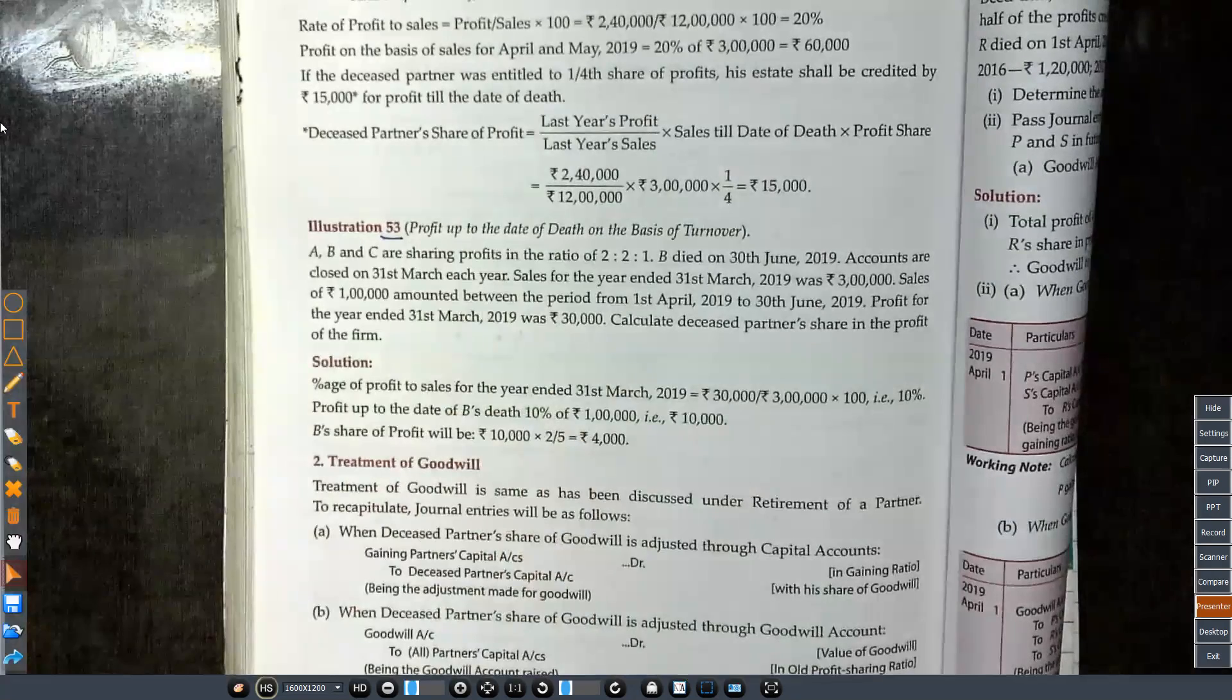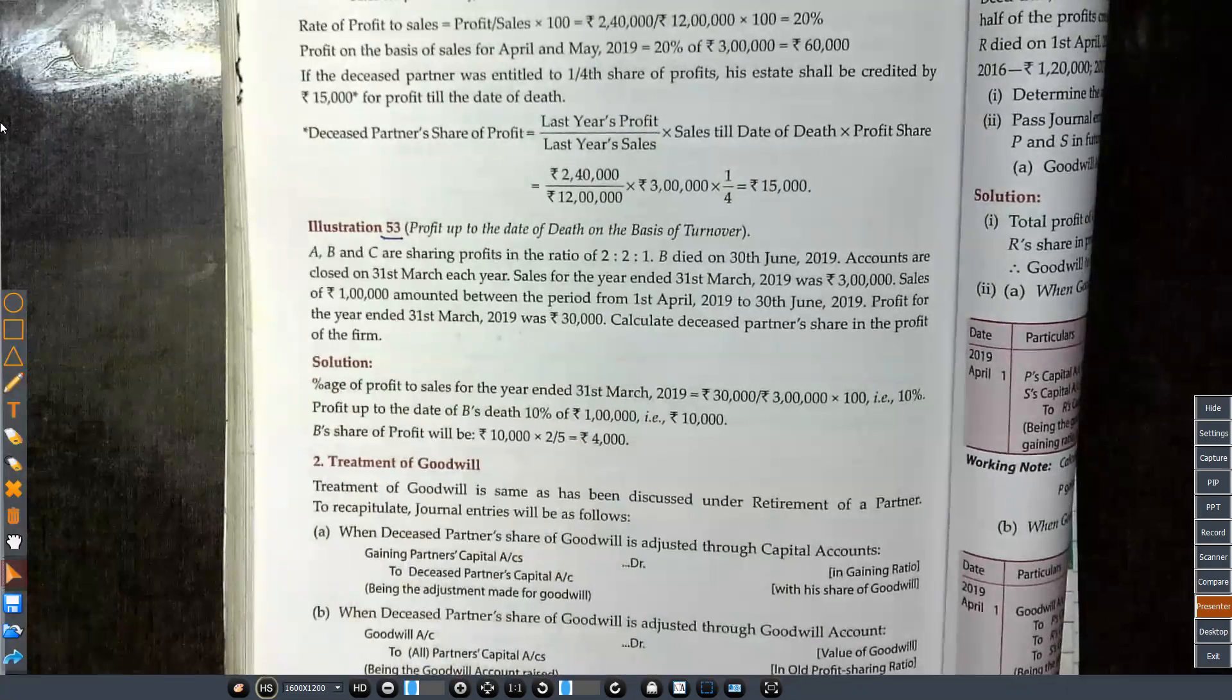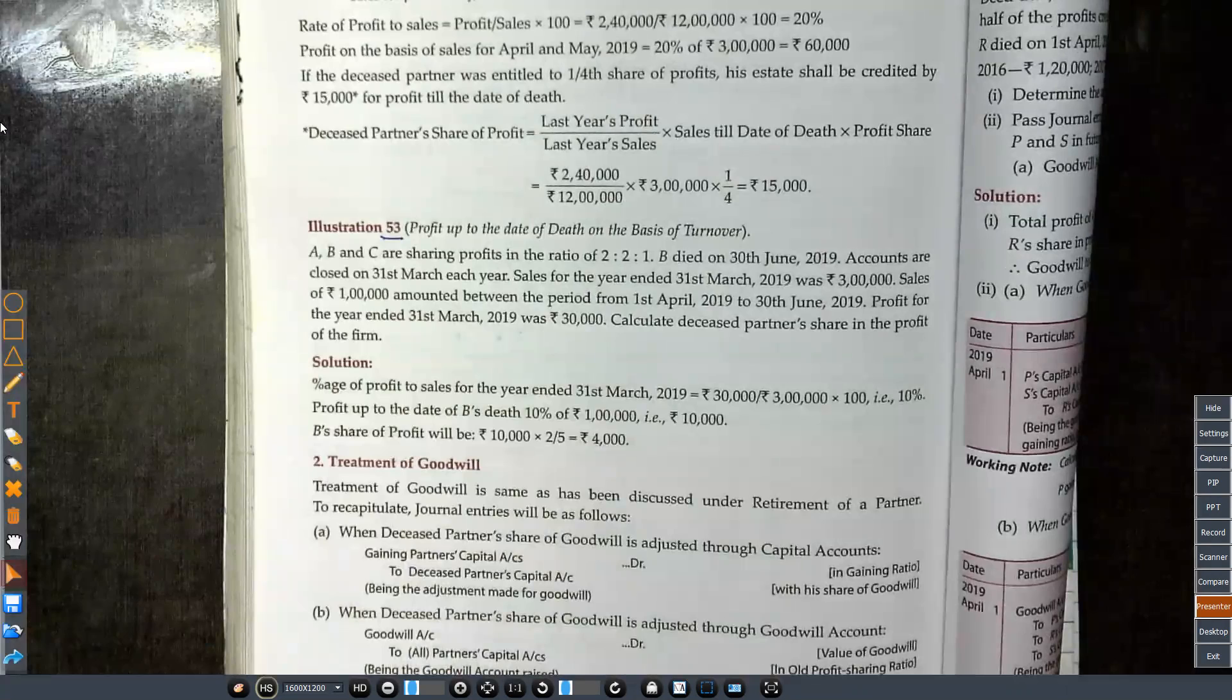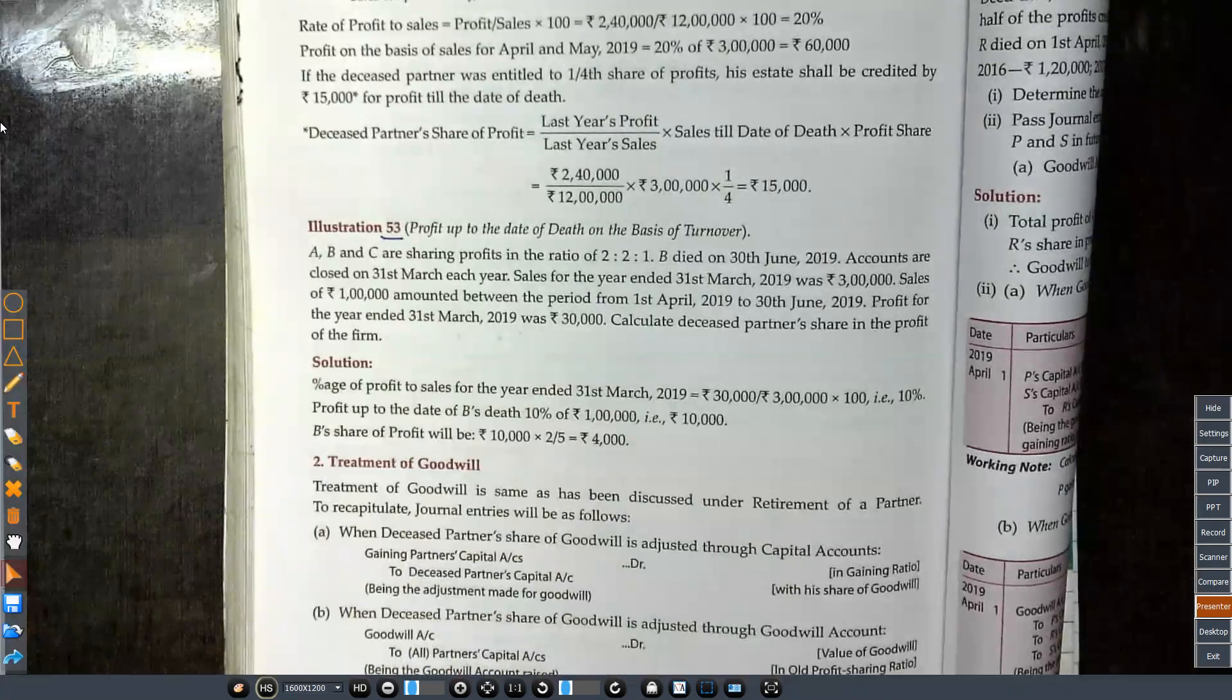We have written ABC, three men in the ratio of 3:2:1. B died on 30th June 2019. Accounts are closed on 31st March each year.